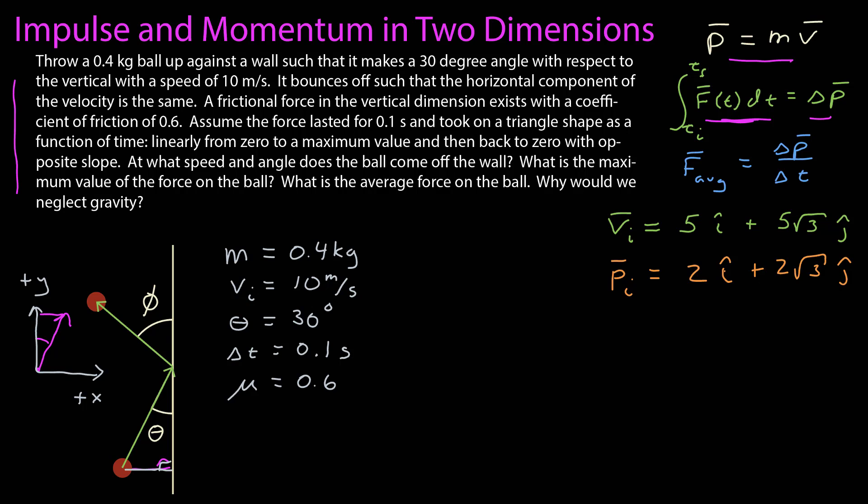I can find the two-dimensional momentum vector by simply multiplying my velocity vector by the mass. I want to find the final velocity and the final momentum. So how might I go about doing that? Well, the information I'm given is that the horizontal component simply switches direction. So if the initial x component of the momentum is 2, then the final x component of the momentum is negative 2. From that, I can calculate the change in momentum in the x direction, which is just negative 4 and the units in SI, kilograms meters per second.